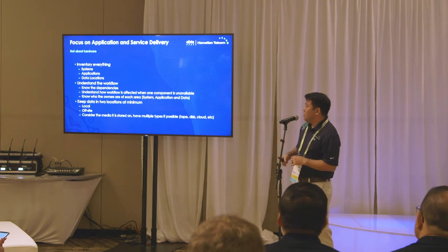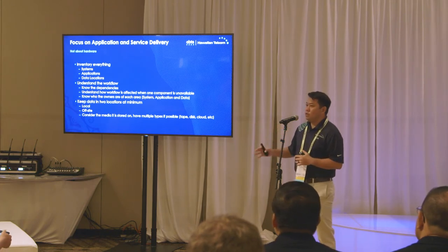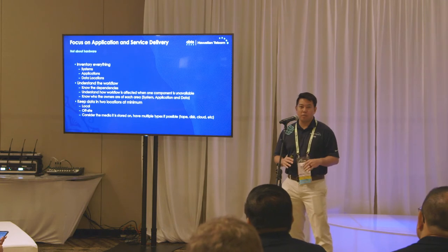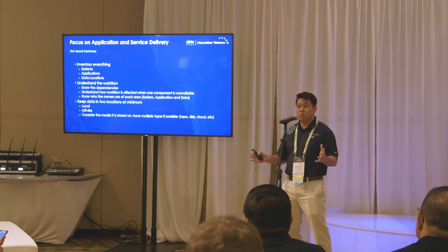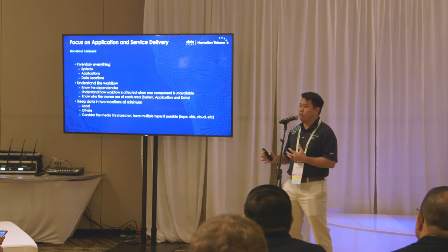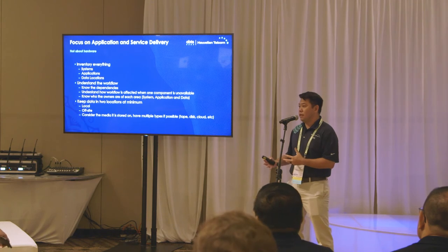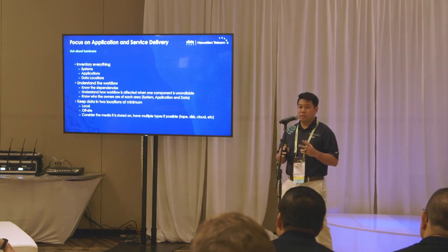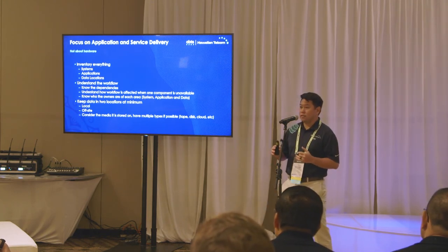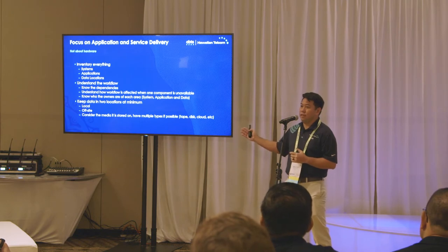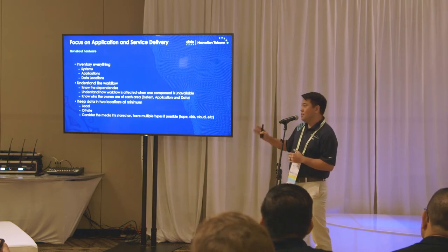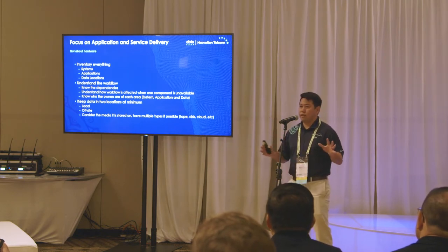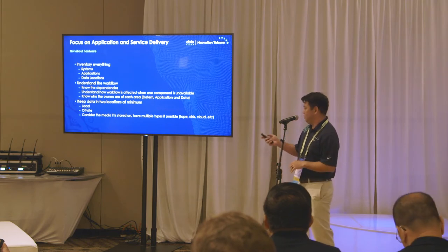When we talk about keeping data in two locations, the old adage in DR or backup was that 3-2-1 rule. Most of you have probably heard of that — you want to have three copies of your data in at least two different media in two locations, one off-site. So easy to remember that 3-2-1 rule. If you Google it, you'll find it — there are lots of people out there talking about it.